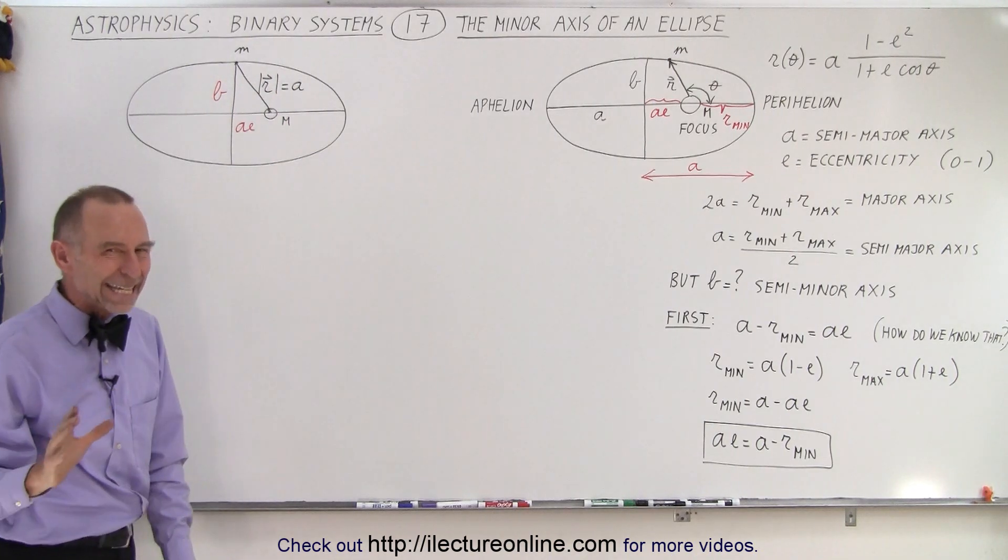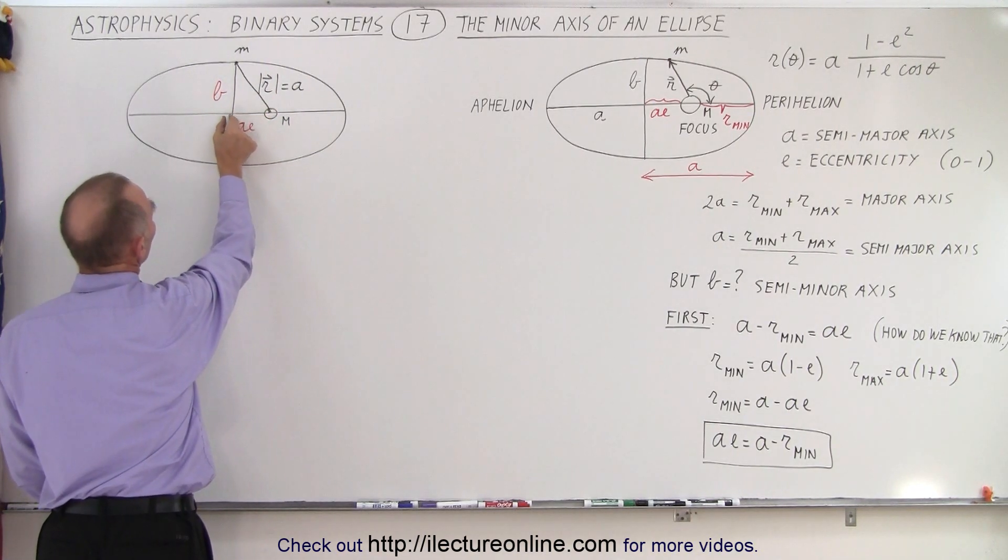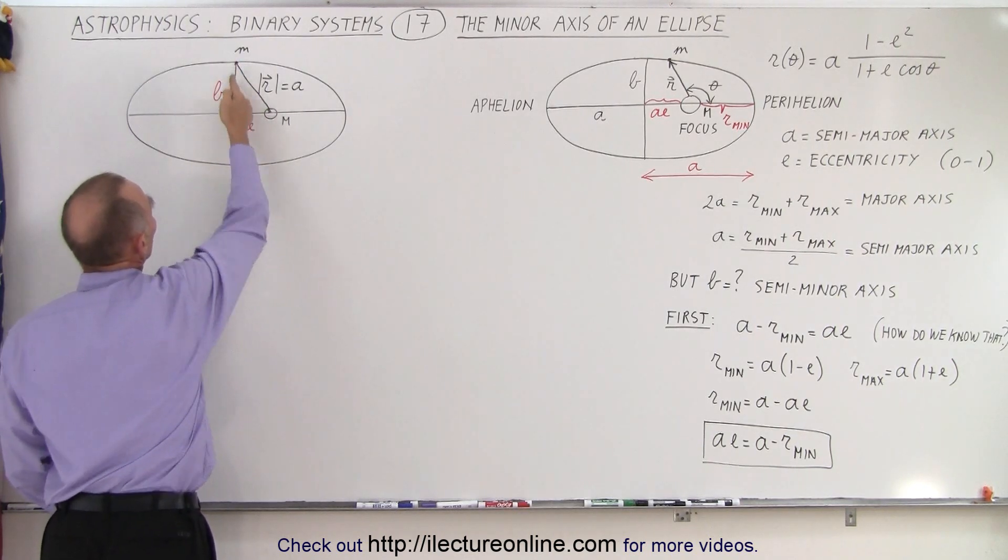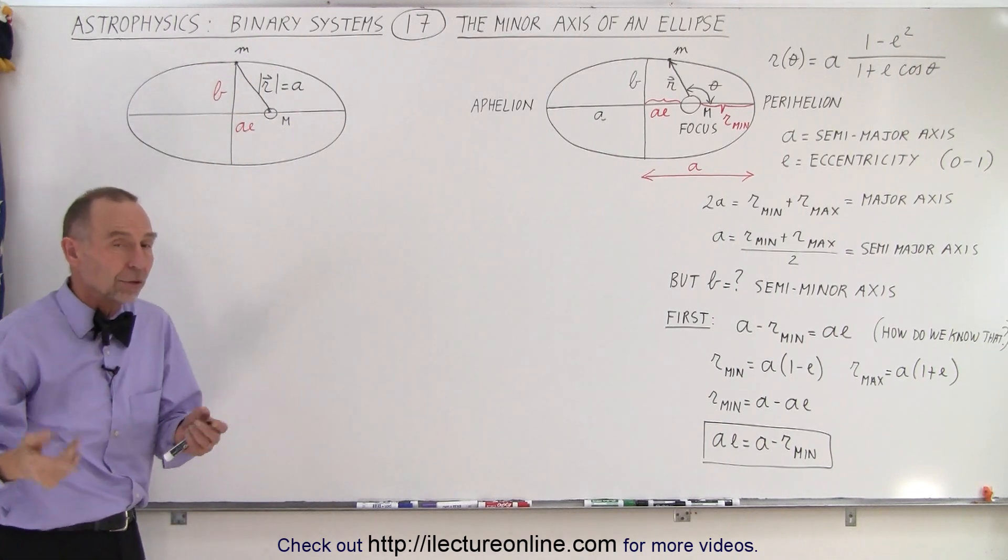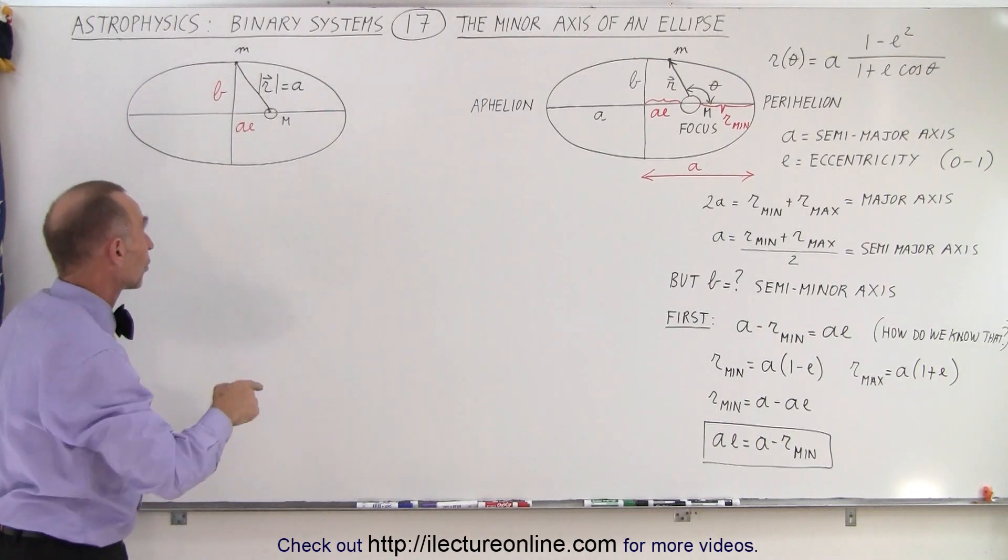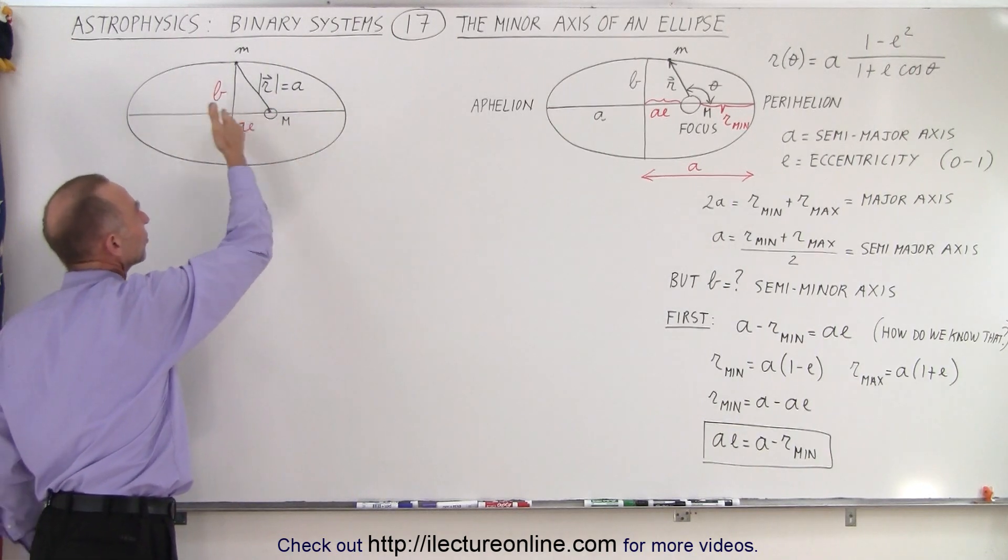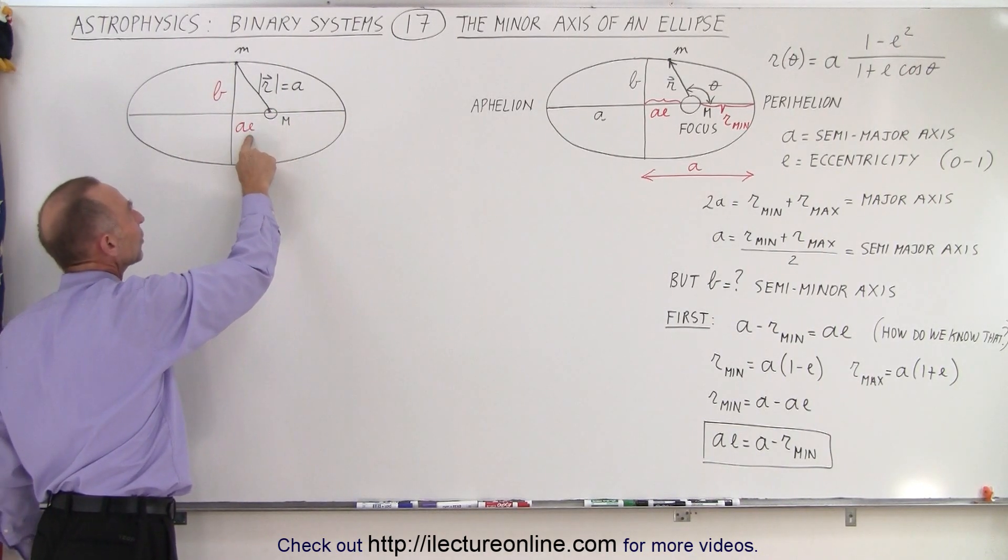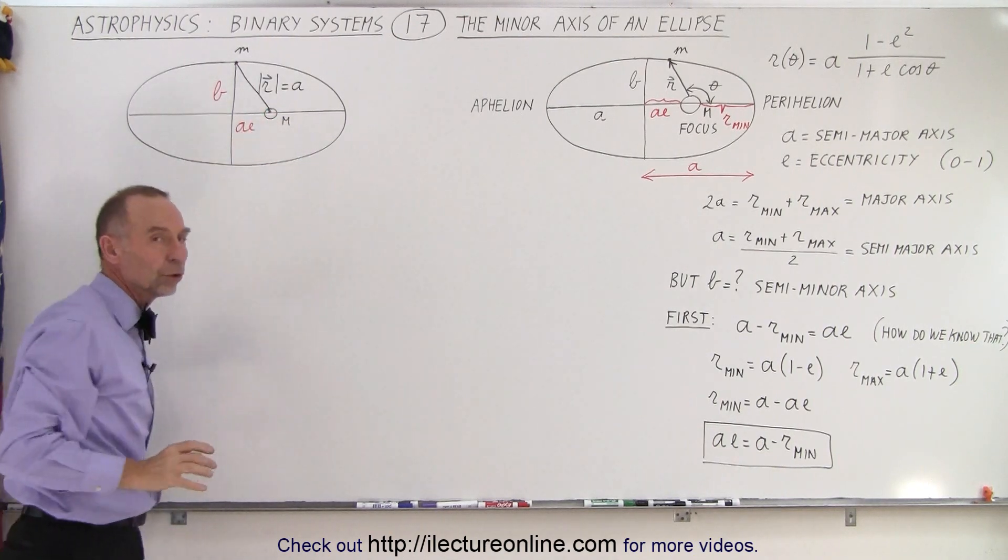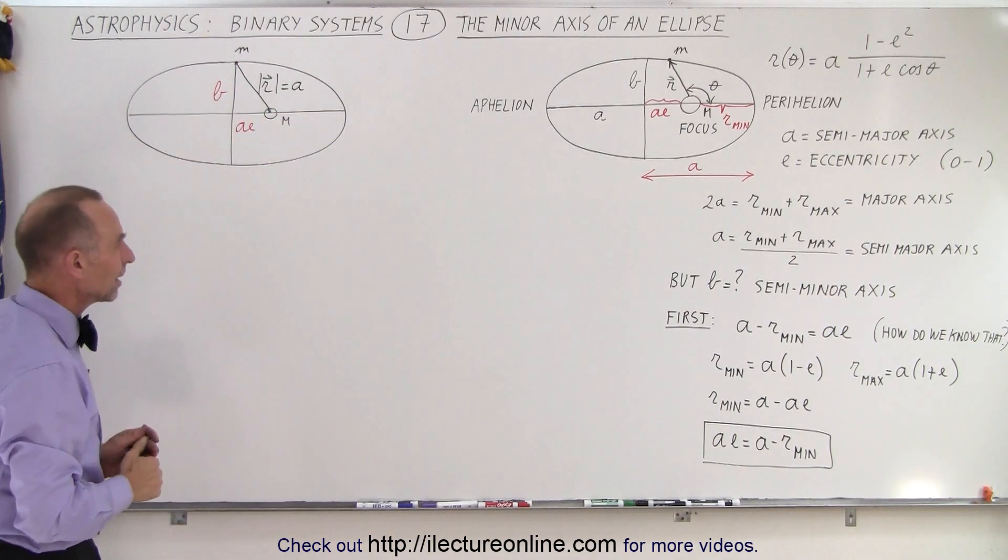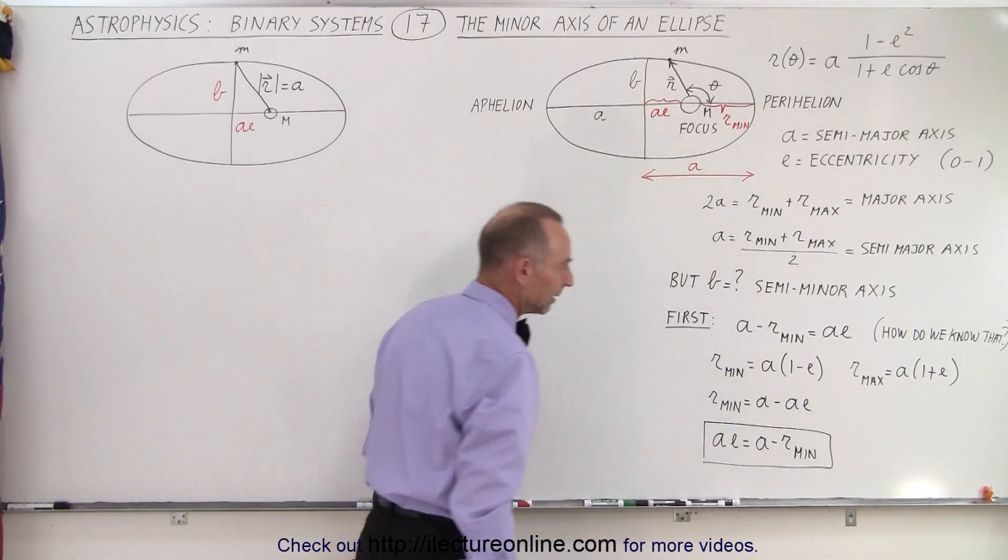Now what if e is 0? If e is 0, then this distance shrinks to 0, and then you can see that A would be equal to B, which makes sense because when e is equal to 0, the orbit would be a complete circle, and so that also makes sense. So we can see that when we find the extended limits, e becomes equal to 1 and e becomes equal to 0, this distance does hold up correctly in that setting. So we seem to be comfortable by saying that Ae is equal to A - r_min.